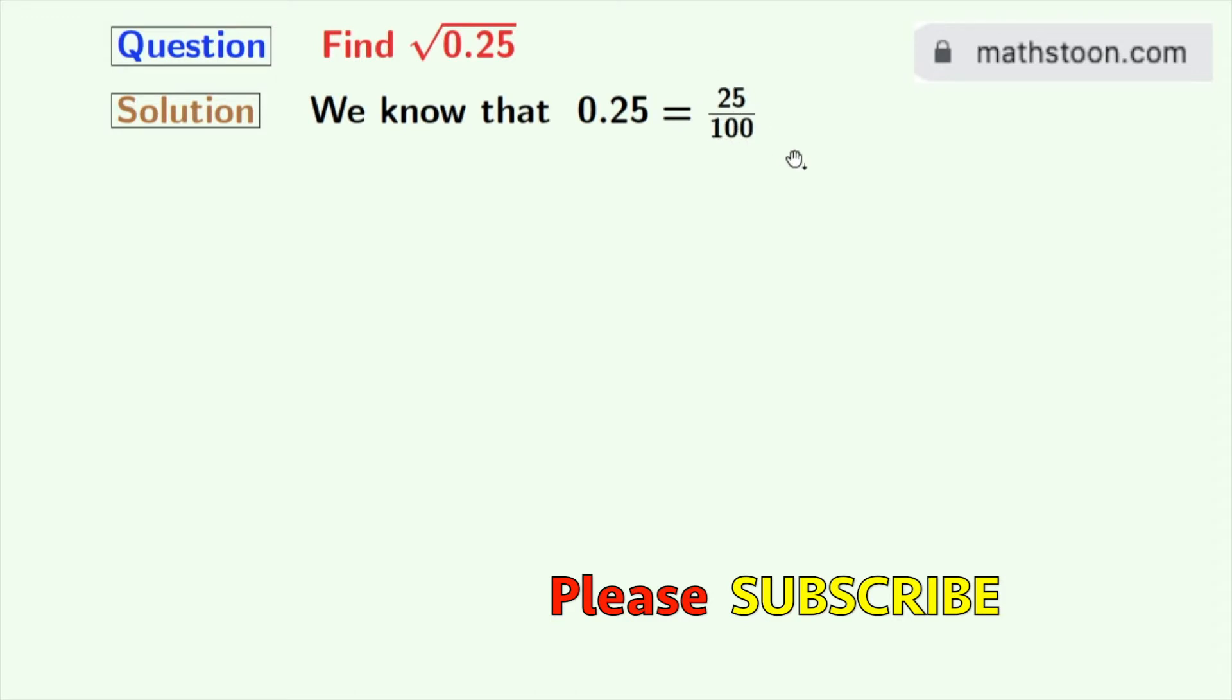Now, if we take square root on both sides, we get square root of 0.25 is equal to square root of 25 by 100.